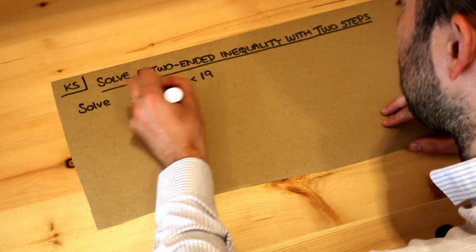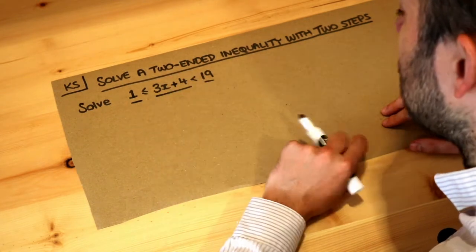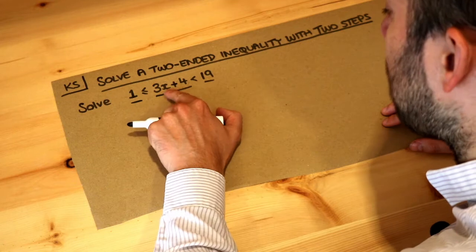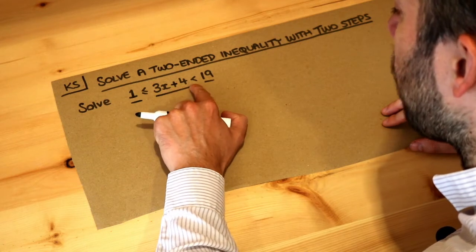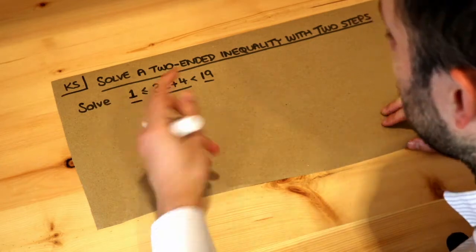So what we do to this we have to do the same to that and the same to that. Now to solve this means to get X on its own in the middle so if X has been multiplied by 3 and then we're adding 4 we undo the last thing done to it so the last thing was plus 4.